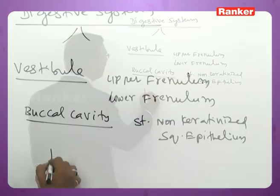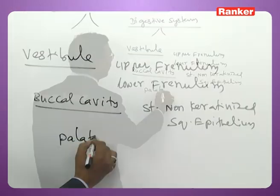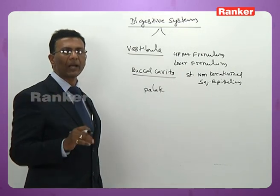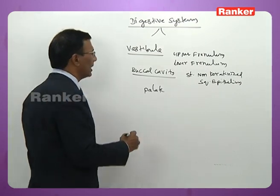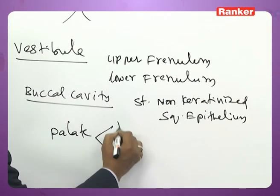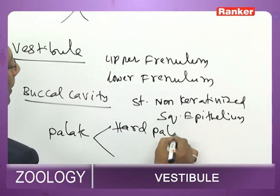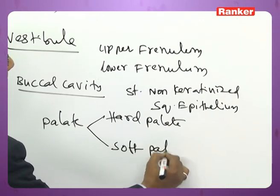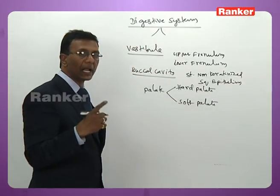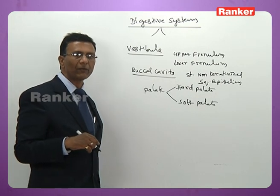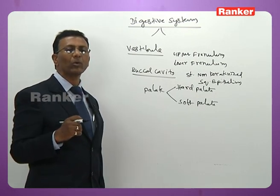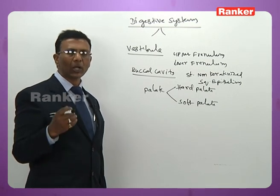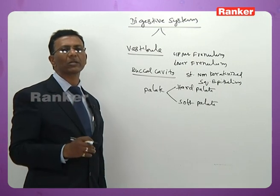The roof of the buccal cavity is called the palate. The palate has an anterior hard palate and a posterior soft palate. The hard palate is formed by bones such as the palatine bones, squamosal bones, and quadrate bone, which take part in its formation.